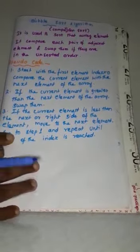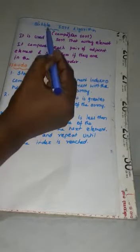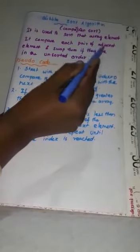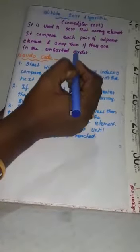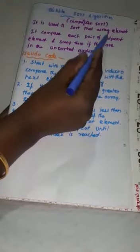Now we are studying about Bubble Sort Algorithm. Bubble Sort Algorithm is a Comparison Sort Algorithm, also known as a Comparison Algorithm. It is used to sort array elements. If the array elements are in unsorted order, Bubble Sort Algorithm is used to sort the array elements — meaning to arrange the array elements.